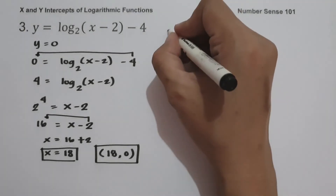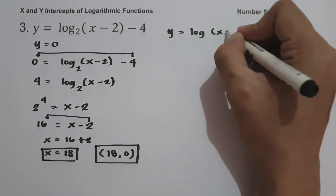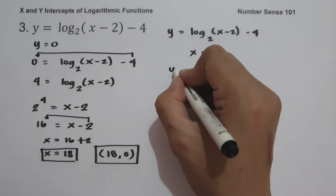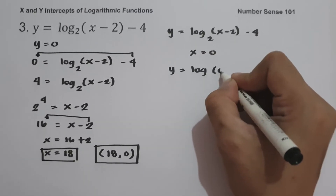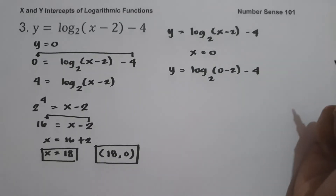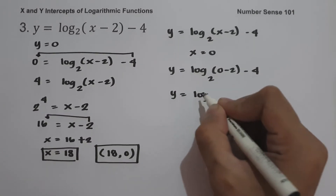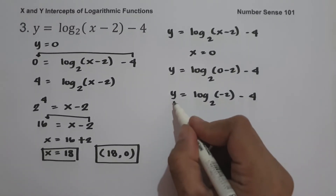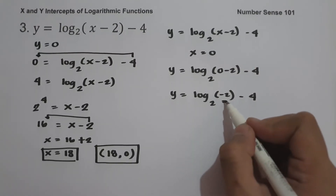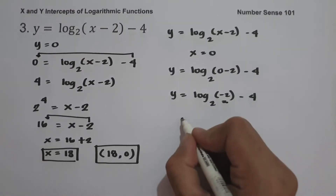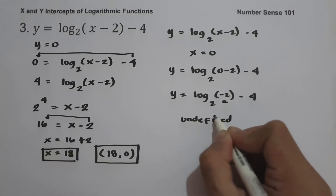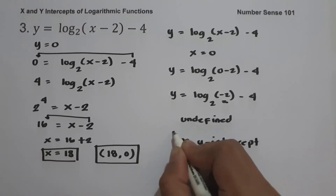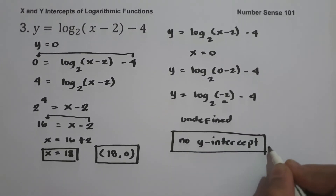And for the y-intercept, let us have y equals log(x − 2) base 2 minus 4, and set x equal to 0. So we get y equals log(0 − 2) base 2 minus 4, which is y equals log(−2) base 2 minus 4. To find the y-intercept, our argument should be greater than 0. Since negative 2 is less than 0, our logarithm is undefined. Therefore, we don't have a y-intercept — our graph will not cross the y-axis.